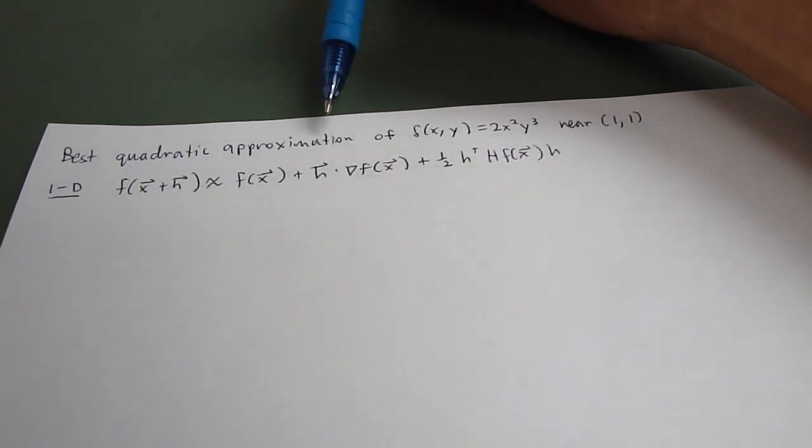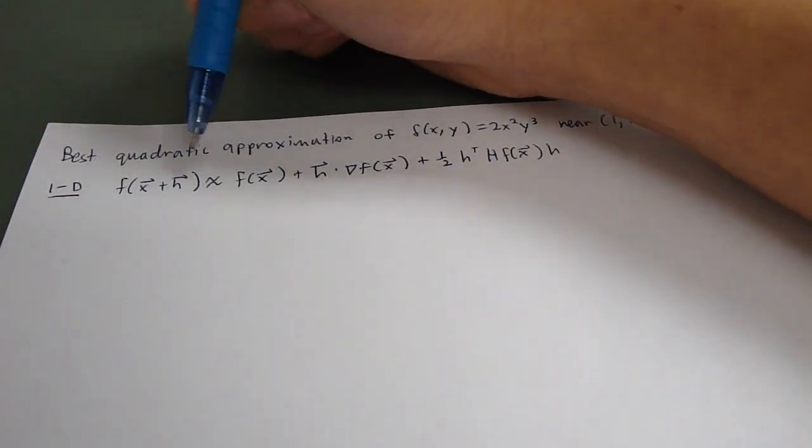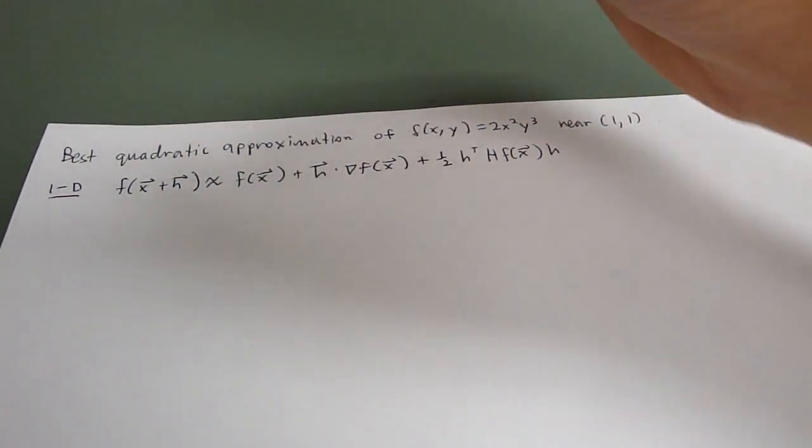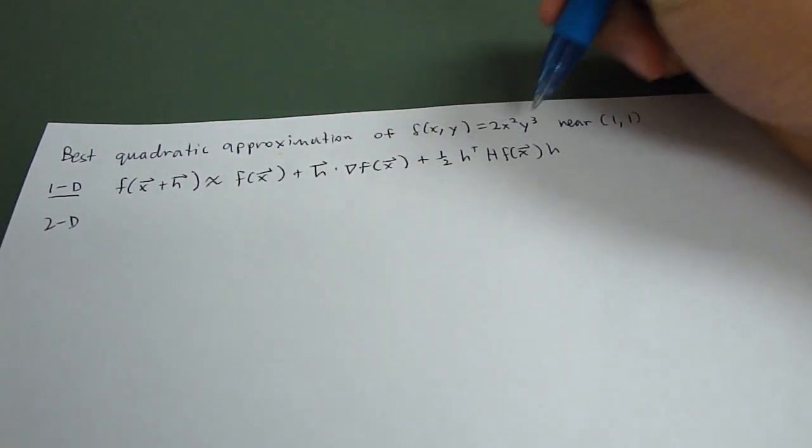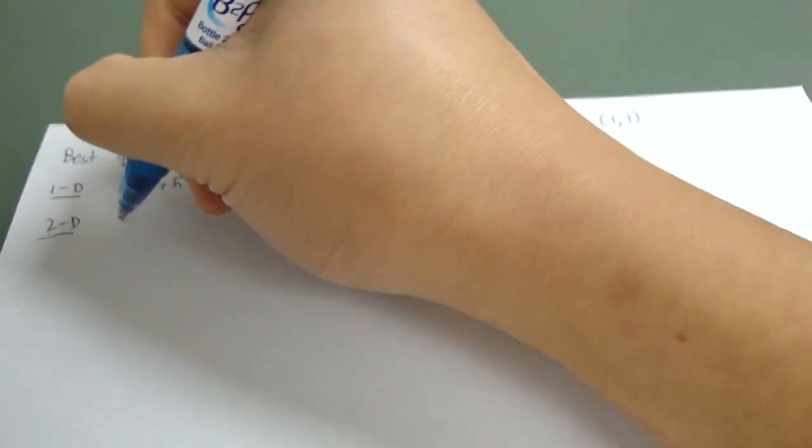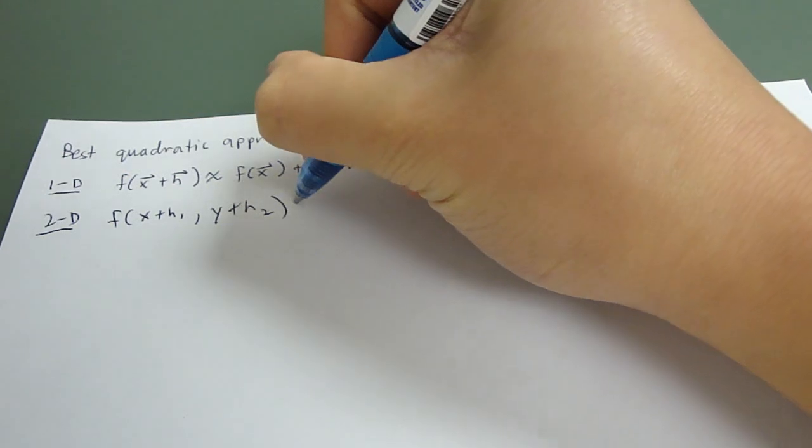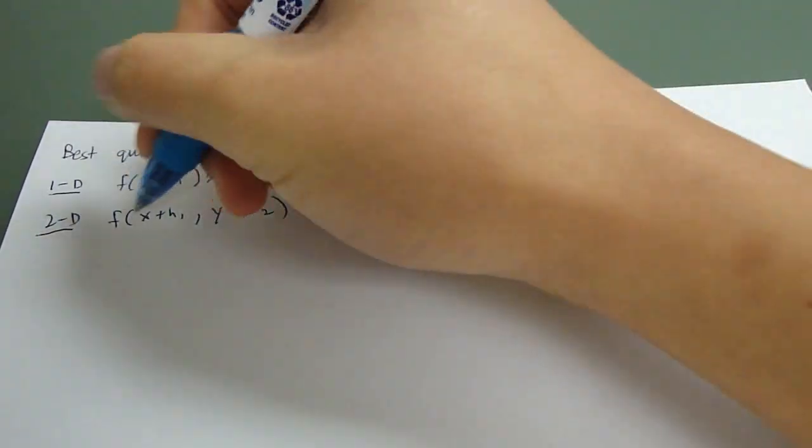Hi, so to find the best quadratic approximation of a function near a point, you would need this equation. But this equation is in one dimension, so our function has two variables, which means it's in two dimensions, so we would insert x and y, so we would have an h1 and h2, and that would give us f of...